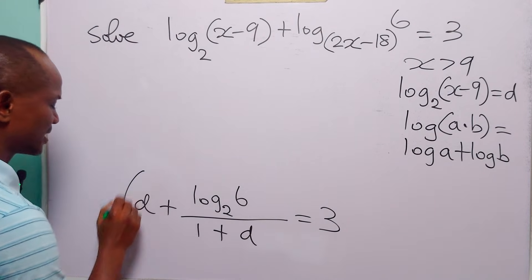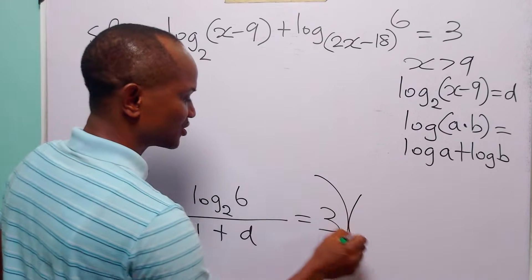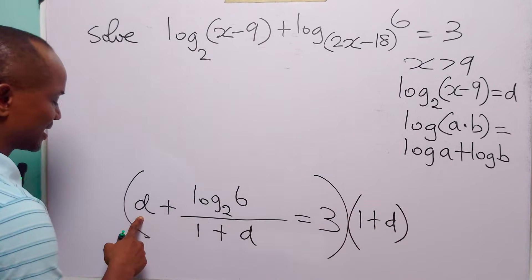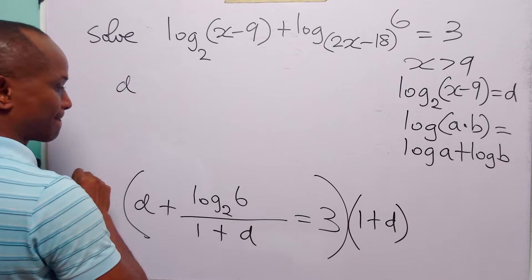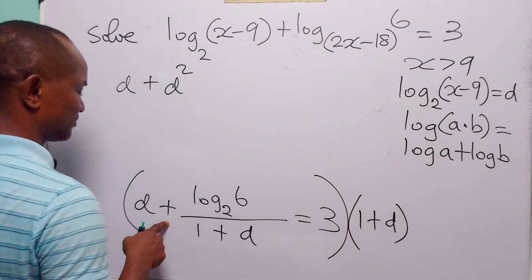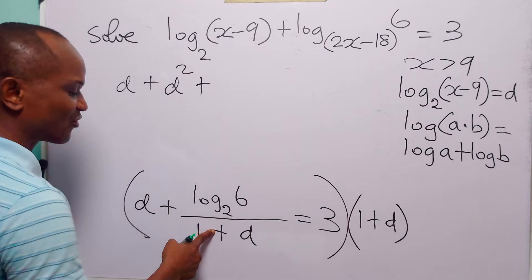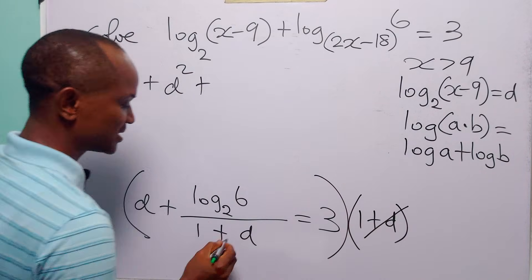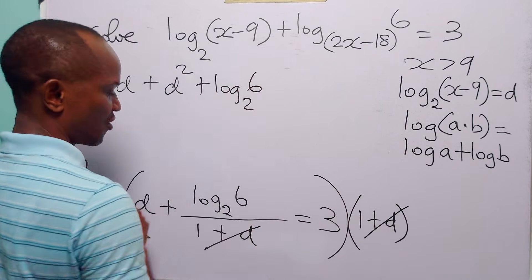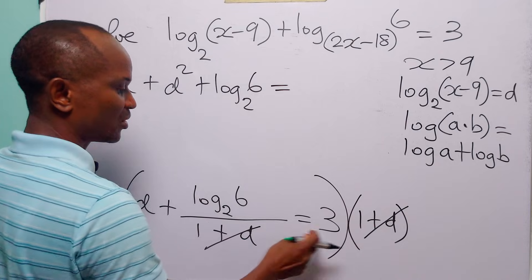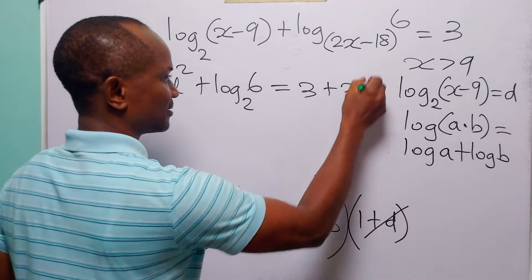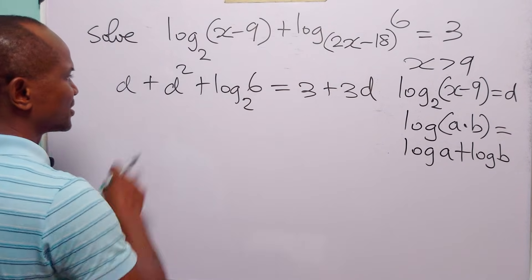And everything is equal to 3. Now to get rid of this fraction, let us multiply through this equation by the denominator, that is 1 plus D. D times 1 is D. D times D is D squared. This fraction multiplied by 1 plus D — of course, this is going to cancel, leaving us with log to base 2 of 6. And this is equal to 3 times 1 which is 3, plus 3 times D which is 3D.